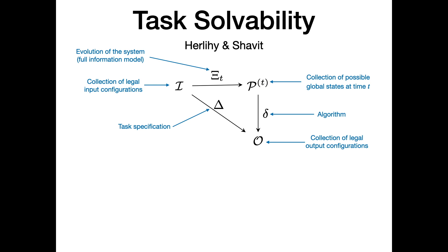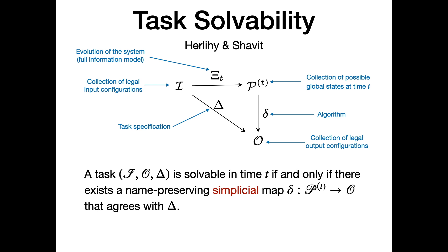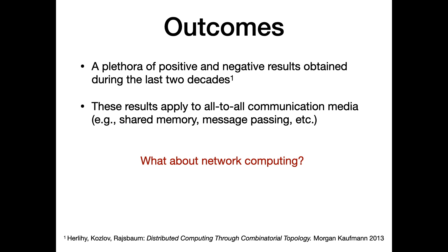One of the main results of Herlihy and Shavit is to characterize what it means to solve a task. A task (I, O, delta) is solvable in time t if and only if there exists a name-preserving simplicial map delta from Pt to O, such that every simplex of the protocol complex is mapped to a simplex of the output complex, and the mapping agrees with the specification delta.